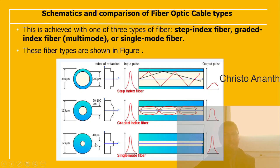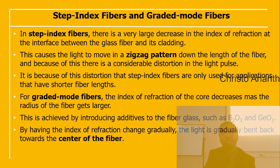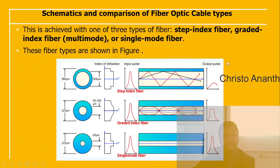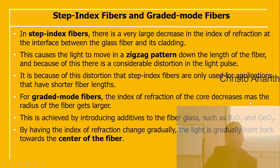In single mode fiber, light propagates in a definite straight line. In step index fiber, there is a large abrupt decrease in refractive index at the interface between the glass fiber and cladding, causing a zigzag propagation pattern down the fiber length. This causes considerable distortion of the light pulse, so step index fibers are only used for shorter fiber lengths.